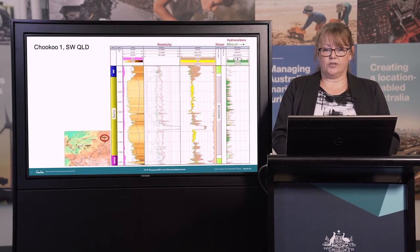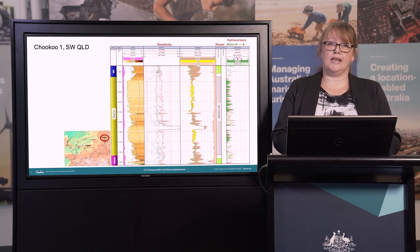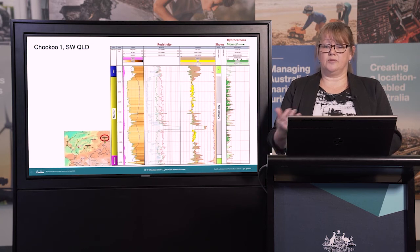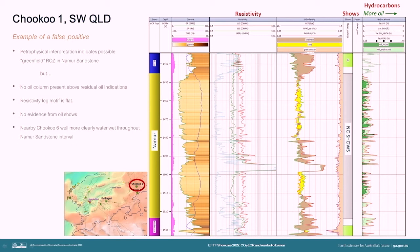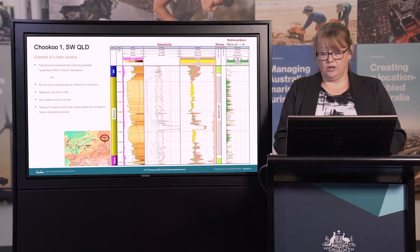We don't always get a positive or straightforward result of course. Sometimes we don't see any evidence of a residual oil zone below the main pay zone at all, and sometimes the petrophysics and shows don't align, and quite often we get false positives. This example from Chukku 1 shows a false positive where the petrophysical interpretation suggests a possible greenfield residual oil zone in the Namua Sandstone between sporadic oil detected in the adjacent Shaley formations. However, we have no oil column present above the residual oil indications, there is a very flat resistivity log motif, there's no evidence from oil shows to substantiate the petrophysical interpretation, and the nearby wells are clearly water wet throughout the same interval. Interestingly though, we do have a confirmed residual oil zone in this well in the Hutton Sandstone.